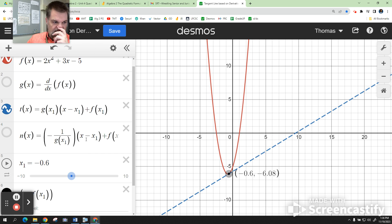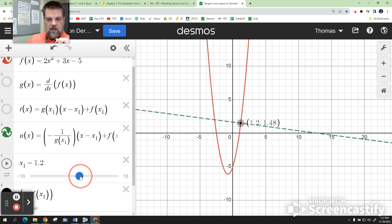To do the normal line, it's the same thing, except remember that for the normal line, it's the negative reciprocal for your slope.